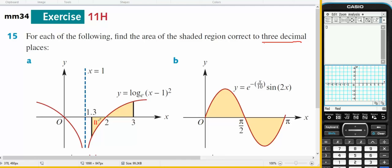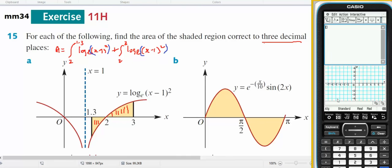This area and this area will be the definite integrals. The integral, because this is negative, I'm going to go from 2 to 1.3 of log base e of x minus 1 squared plus the integral from 2 to 3 of log base e of x minus 1 squared. I'm going to be putting that squared inside separate brackets.